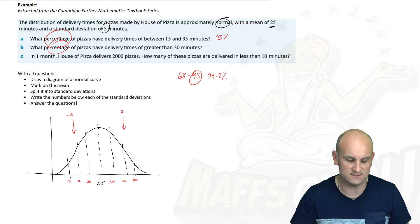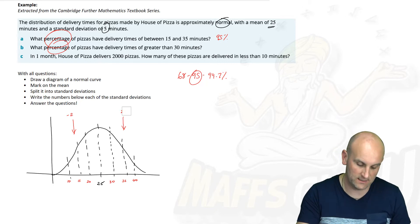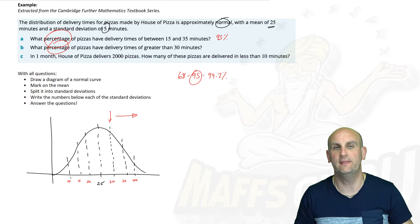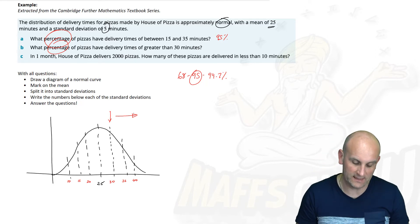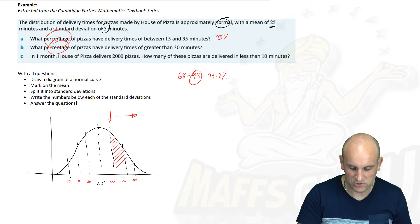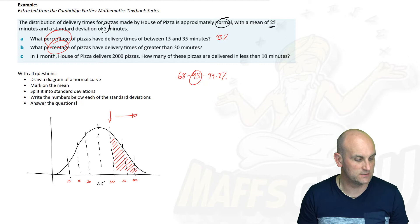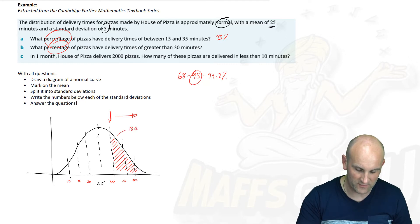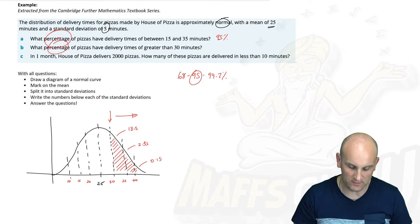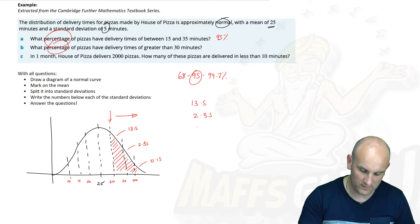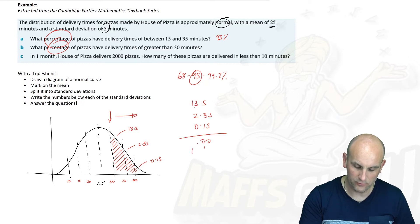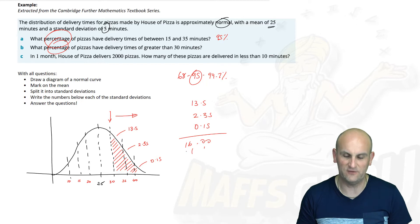Next: what percentage have delivery times of greater than 30 minutes? Back to my diagram. I'm looking for greater than 30 minutes. There's my 30 minutes and I'm drawing my arrow. I'm going to shade this in. I know that that second section there is 13.5% of my data, that's 2.35%, and that little end bit is 0.15. If I add all of those together, 13.5 plus 2.35 plus 0.15, that gives me 16% of my data.